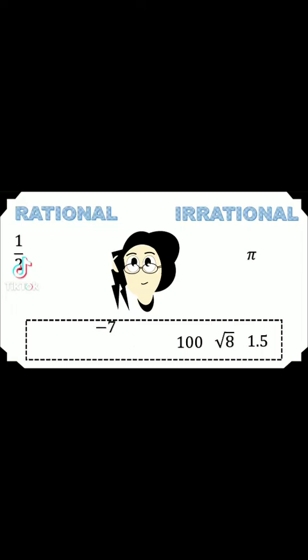Negative 7 is rational, same with 100. Both numbers can be expressed as fractions.